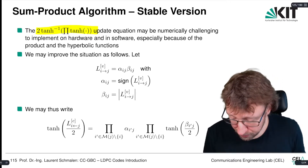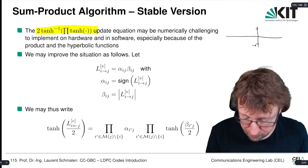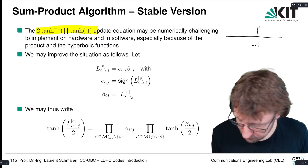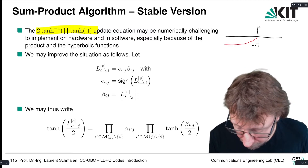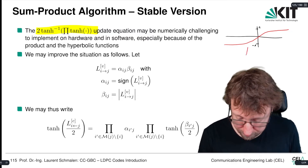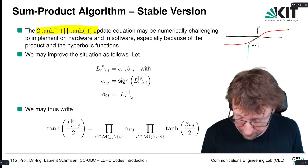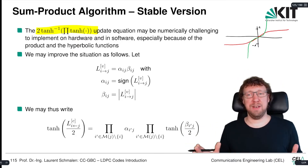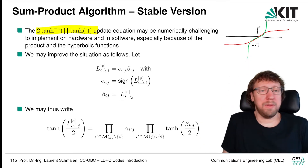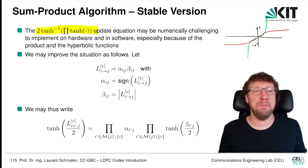The hyperbolic tangent function is a pretty nice function, but the output is contained between plus 1 and minus 1. Its inverse function goes from minus infinity quickly to plus infinity, so the inverse function can be quite nasty. And on top of that, you have a product, which is also difficult to implement, in particular in hardware — you prefer to have additions.